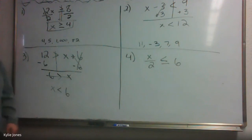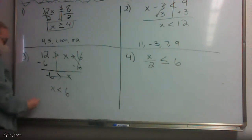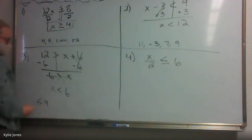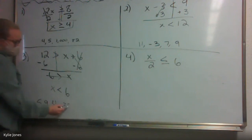What sort of numbers are less than 6? 5.9, 4, negative 38 — there's an infinite number of possibilities. Anything less than 6.